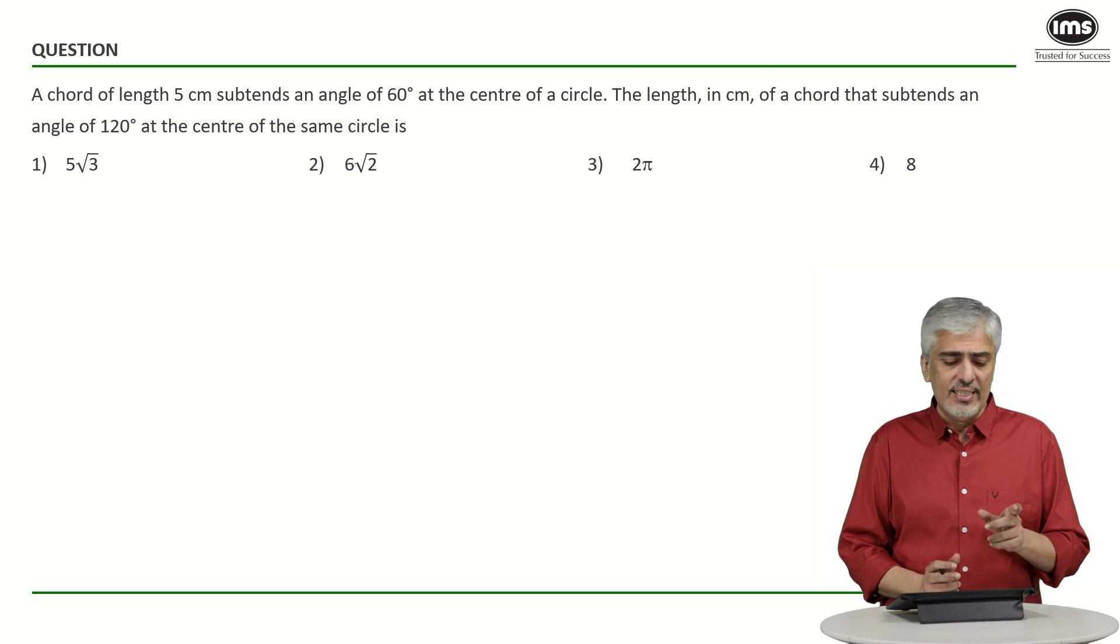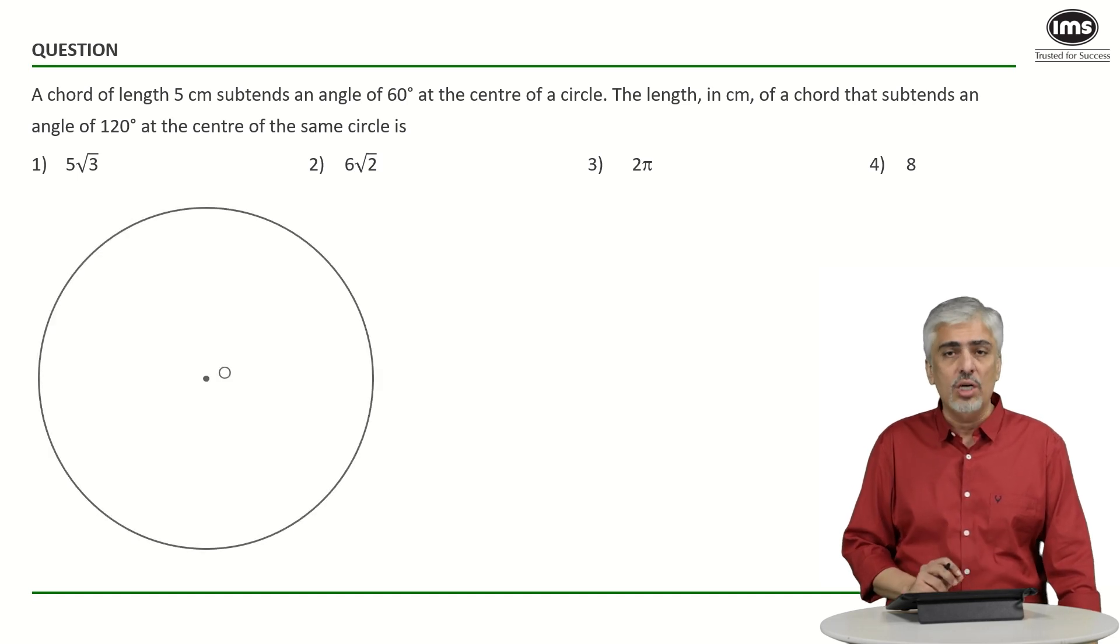Now, here they are telling us that there's a chord of length 5 centimeter which subtends angle of 60 degrees at the center of the circle. So your diagram would look something like this. There's a chord, this is a center, chord AB of 5 centimeter and subtends angle of 60 degrees at the center, which means angle AOB is 60 degrees.